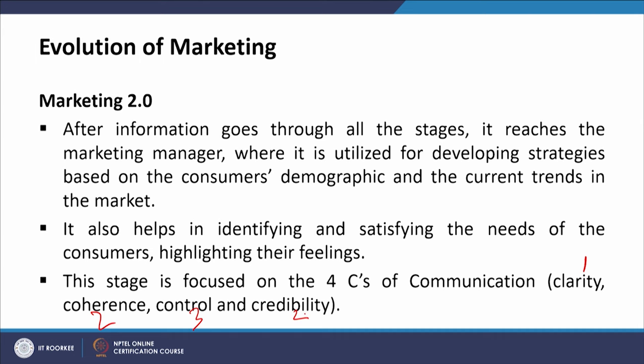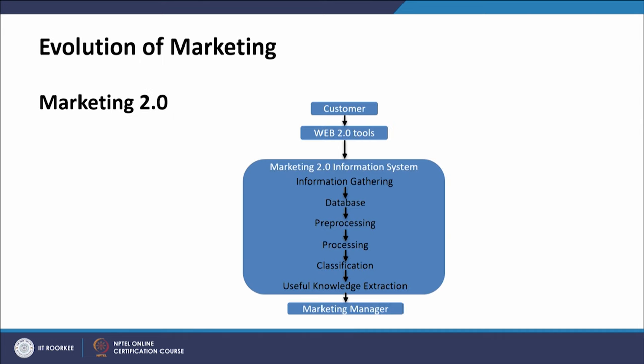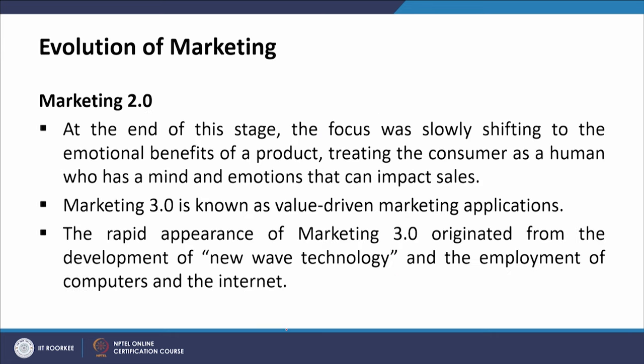After information goes through all these stages, it reaches the marketing manager where it is utilized for developing strategies based on consumer demographics and current market needs. It also helps to identify and satisfy the needs of consumers, highlighting their feelings. The next stage focused on the four C's of communication: clarity, coherence, control, and credibility. At the end of this stage, the focus was slowly shifting to the emotional benefits of a product, treating consumers as human beings with a mind and emotions that can impact sales.